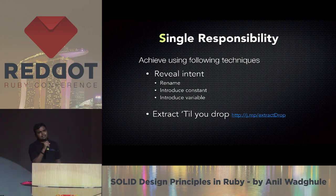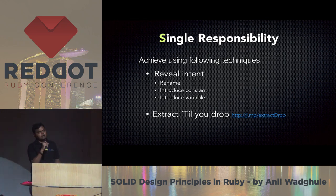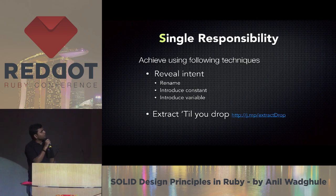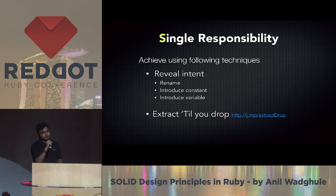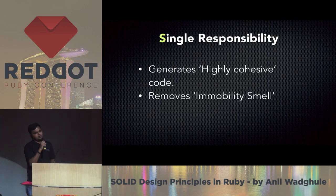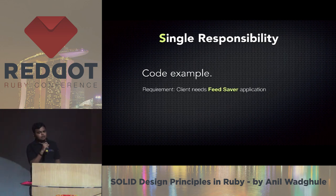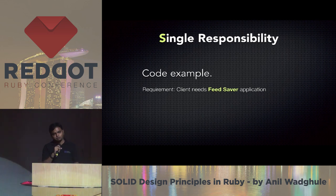Ways to achieve this principle include revealing intent — find out what the intent of your code is, rename variables, rename methods, introduce constants, extract methods into other methods, extract behavior to other classes. Following single responsibility generates highly cohesive code and removes the immobility smell. For example, a feed server application fetches feed from a URL, parses it, and saves it to a database.